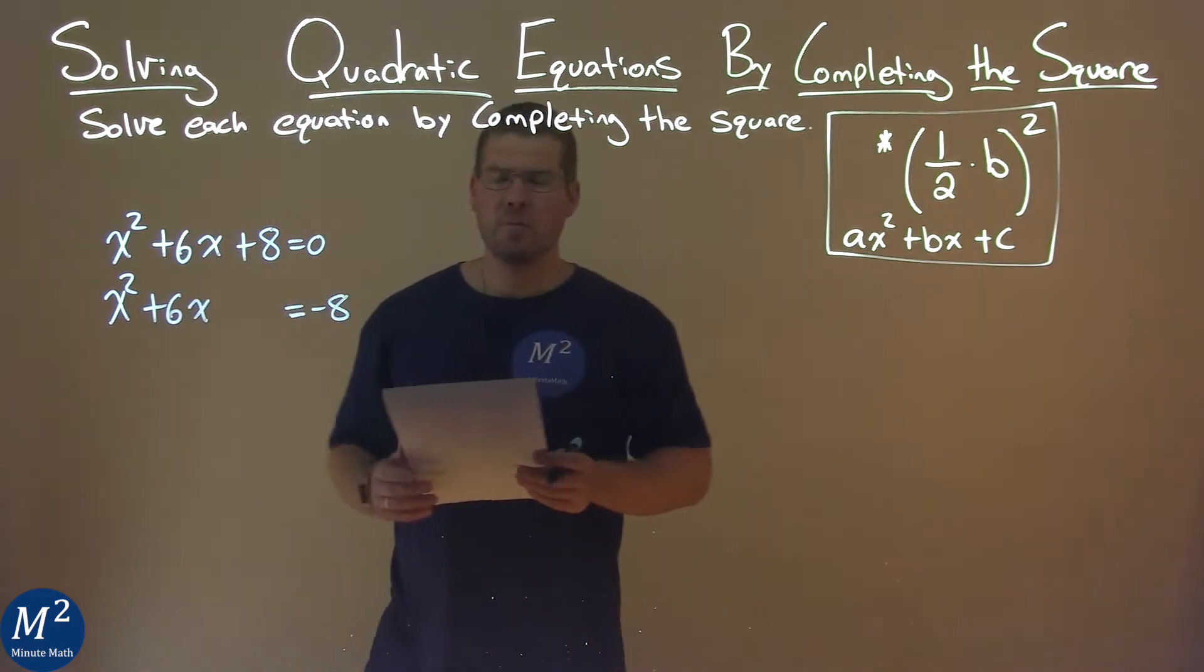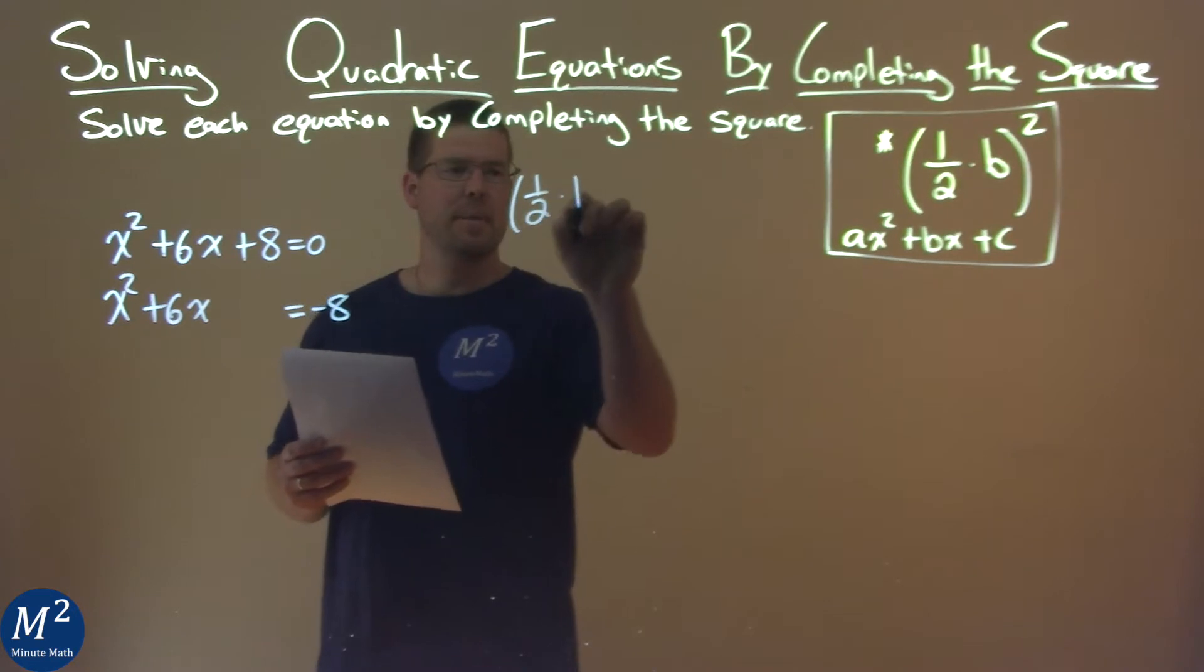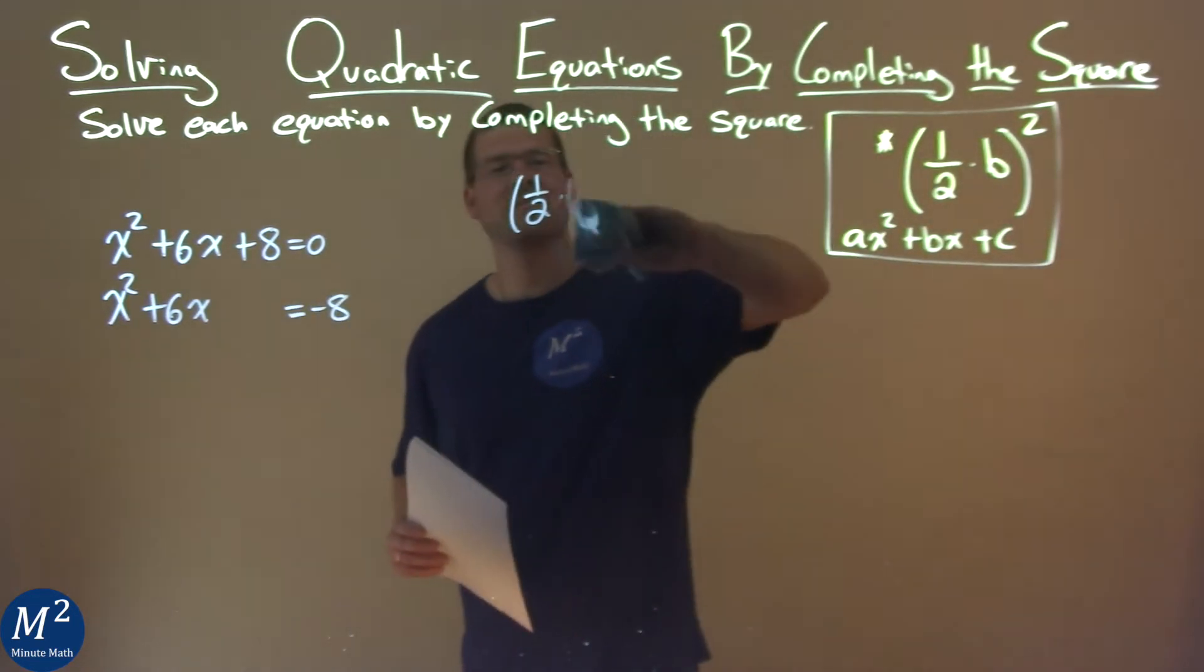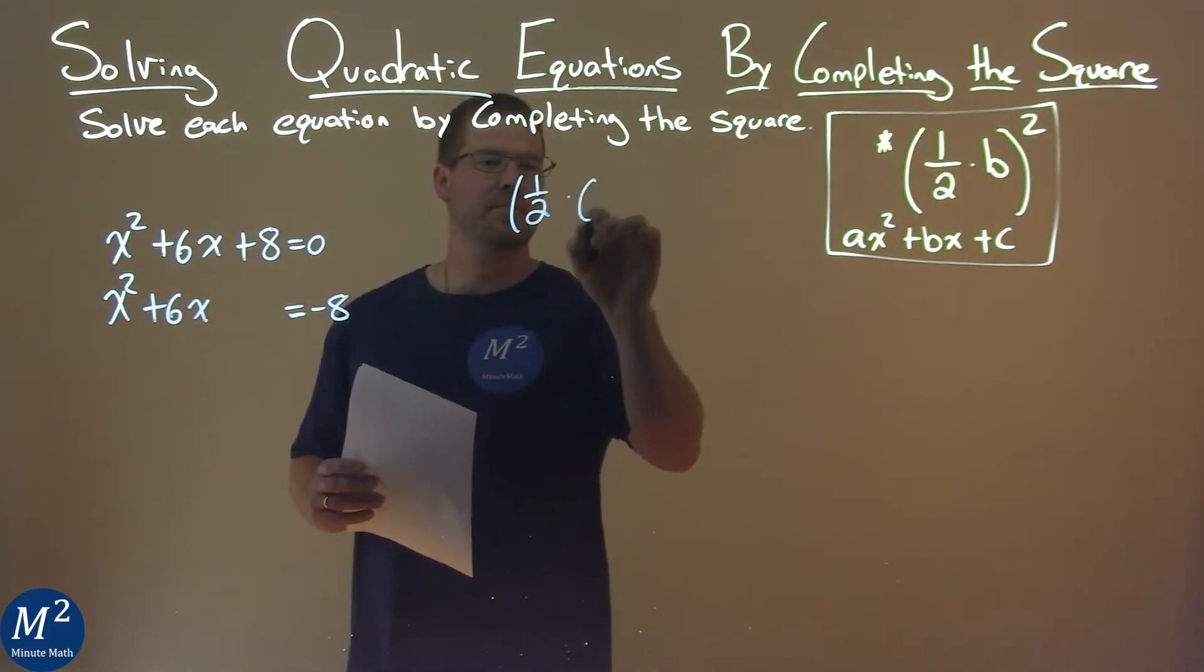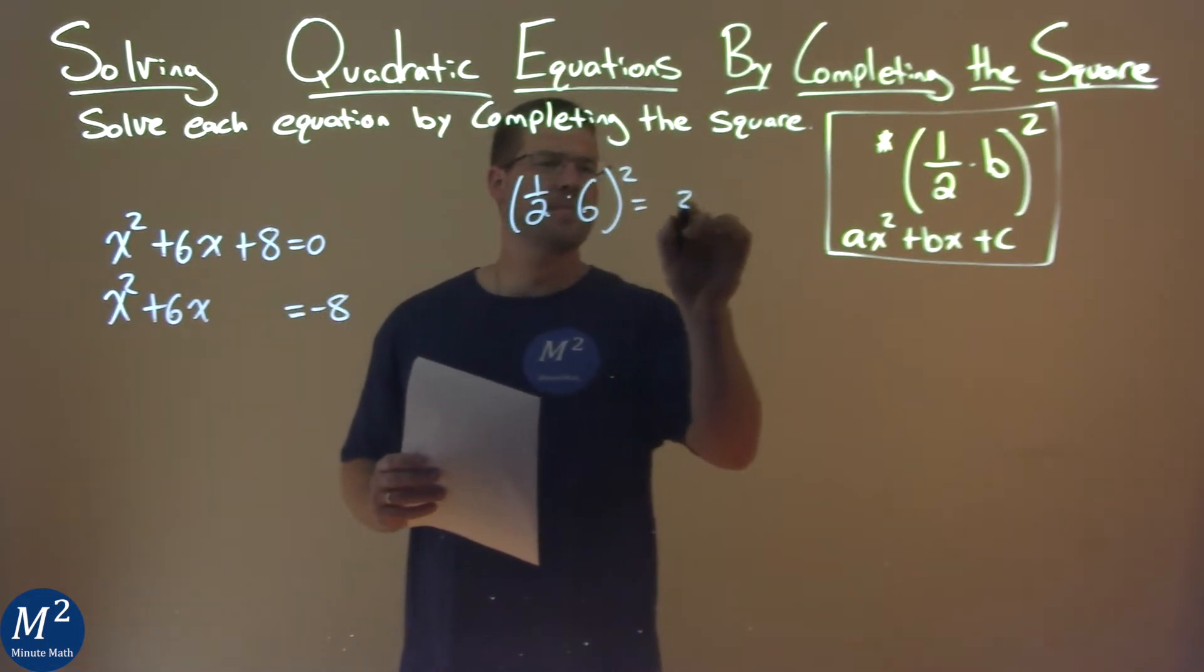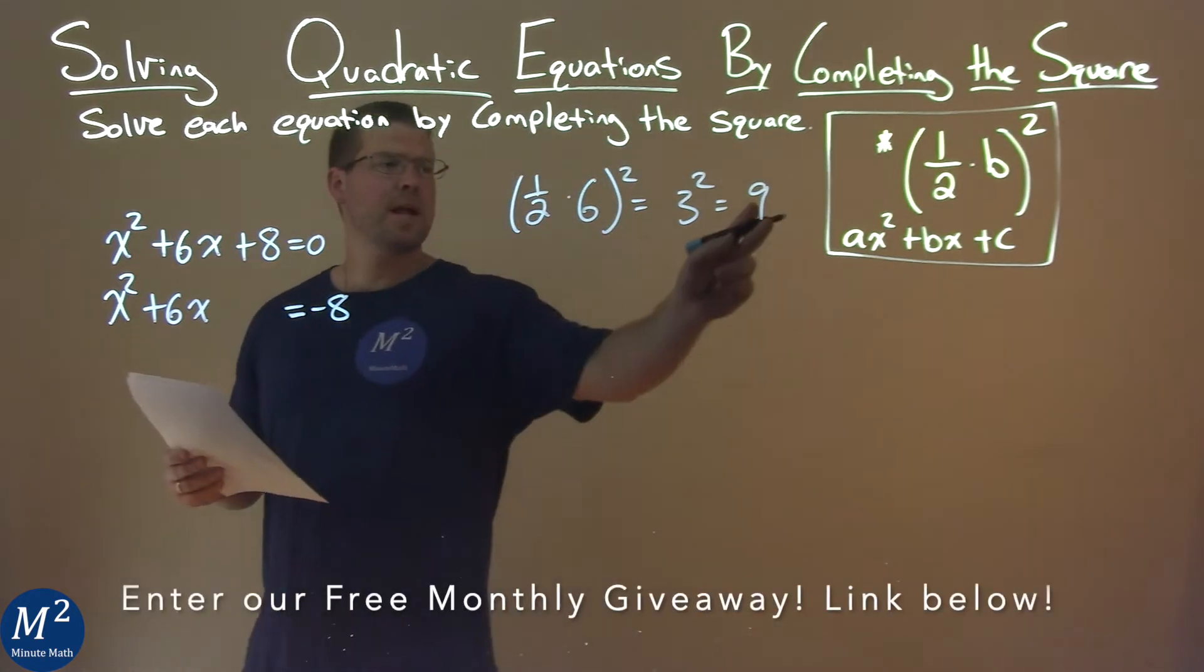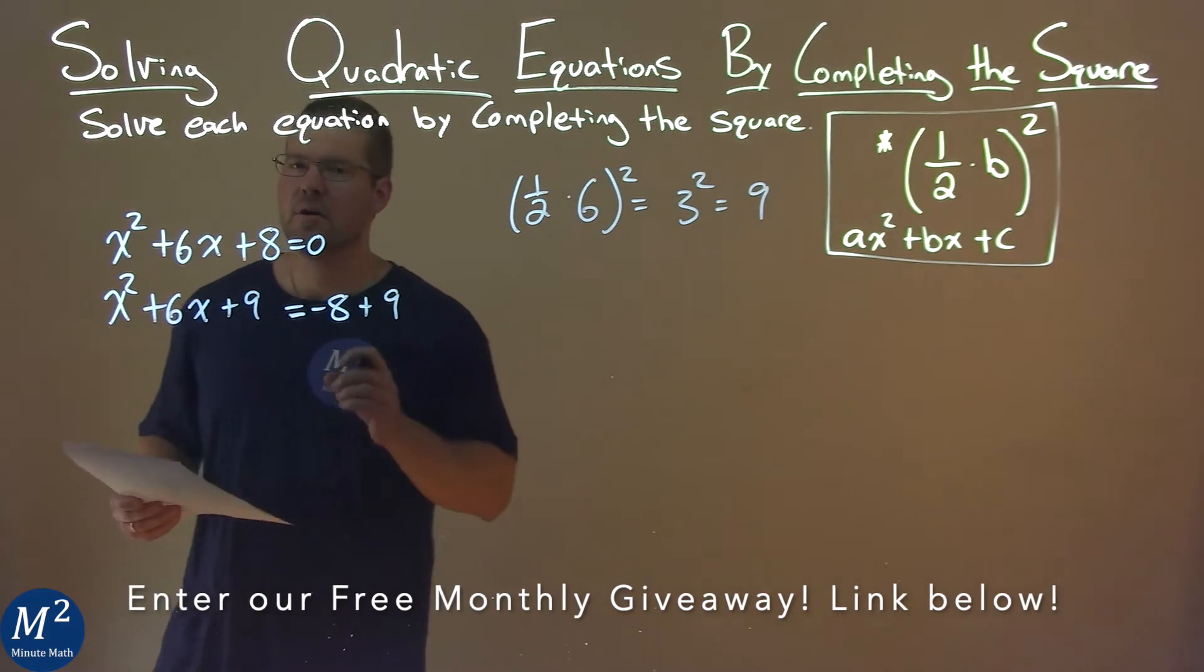Now, I look at my b value, which is 6. I'm going to use my formula. 1 half times b, which is 6. 1 half times 6 is 3, and 3 squared is 9. So we're now going to add 9 to both sides of the equation.